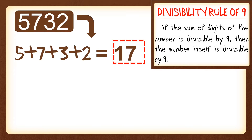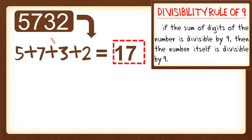For the last step, we're going to determine if it is divisible by 9 or a multiple of 9. And 17 is not divisible by or a multiple of 9, so 5,732 is also not divisible by 9.